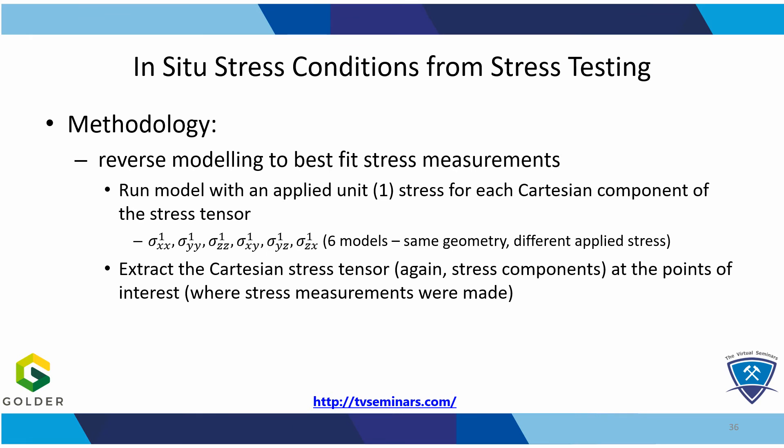What we are going to try to do is estimate the regional or far-field stress tensor, such that when it is applied to the numerical model it will produce stresses that match the in-situ stress measurements at the locations they were performed, or at least minimize the error in those stresses. In order to do that, we will decompose the stress tensor into its six Cartesian components. We then run the model six times, each time with a unit stress for each component separately — that means the same model geometry and a different stress field. This allows us to build an influence matrix representing the contribution from each unit component of the stress field, such that when we multiply this matrix by the original stress estimate, we can obtain the measured stresses at each location of interest.